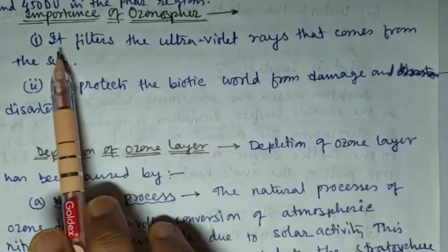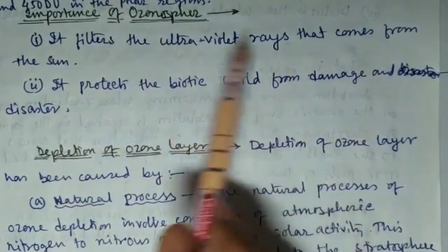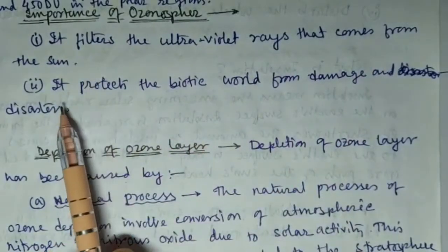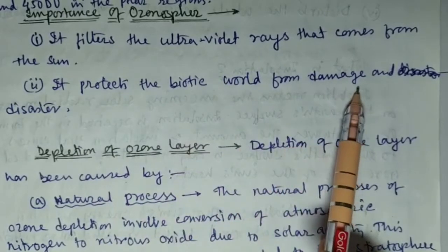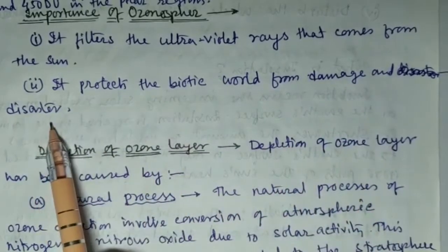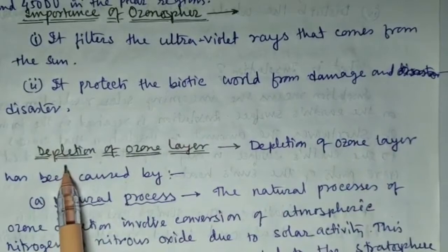Importance of ozonosphere: Number one, it filters the ultraviolet rays that comes from the sun. Number two, it protects the biotic world from danger, damage and disaster.